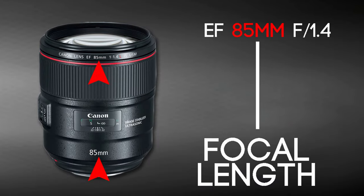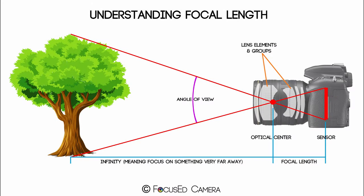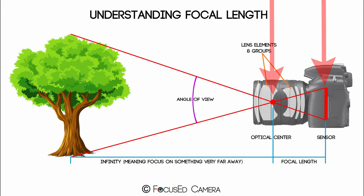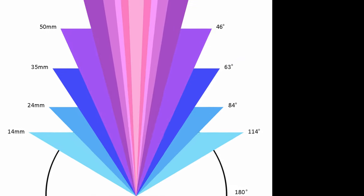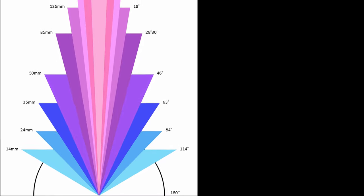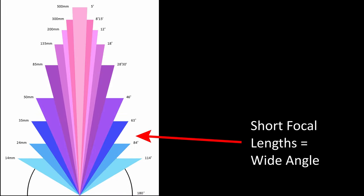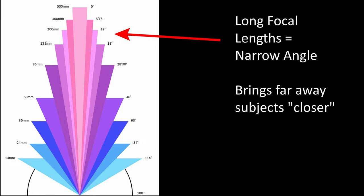The next set of letters and numbers we need to understand are the focal length. Focal length is measured in millimeters — this number is the distance between the camera's sensor and the lens's convergence point or focus point. It's not the actual measurement of the length of the lens itself. The focal length tells us how much of our scene will be captured, basically our angle of view. Shorter focal lengths have a wider angle of view, whereas longer focal lengths have a smaller angle of view and a higher level of magnification.